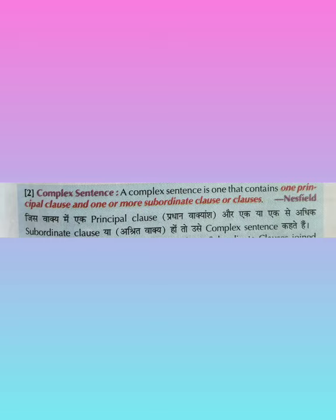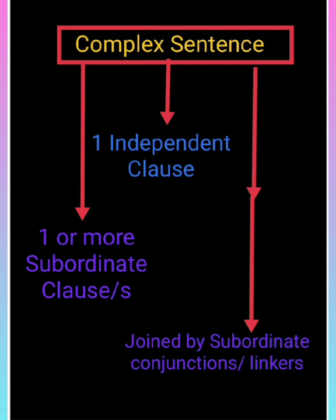Next, ab hum chalte hain complex sentence ki taraf — mishra vakya ya mishrit vakya. Complex sentence ki definition kya hai: A complex sentence is one that contains one principal clause and one or more subordinate clauses. Mishrit vakya woh vakya hai jis mein ek hi principal clause — pradhan vakyansh — hota hai aur ek ya adhik ashrit vakyansh (subordinate clauses) hote hain.